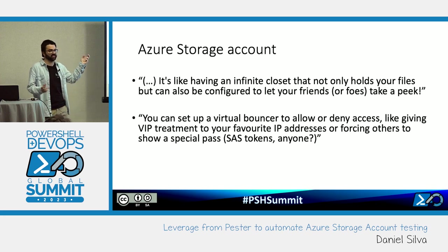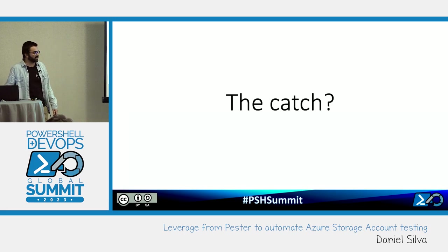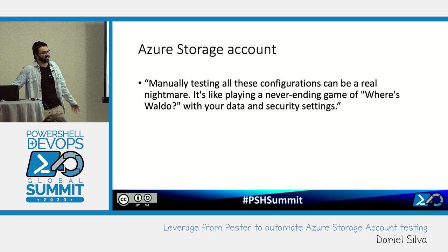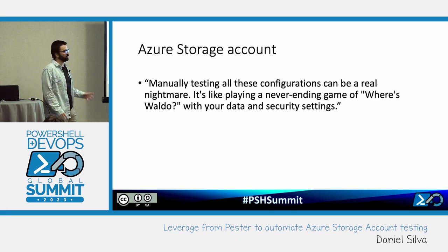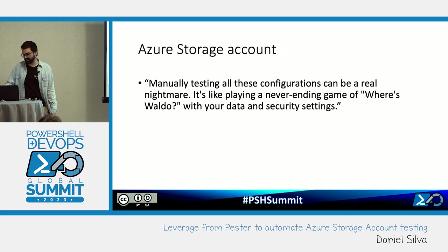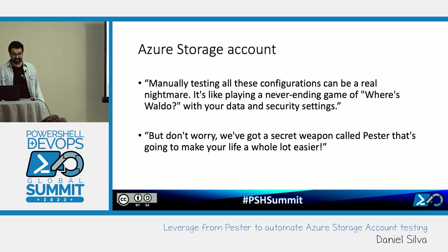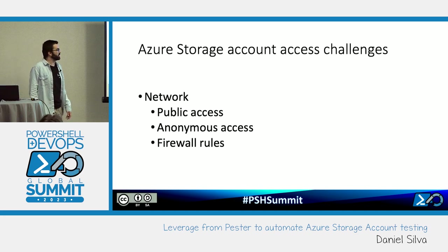What's the catch with all of this? Once you start digging into testing all of these settings — and I won't be doing manual tests — the amount of places you have to visit is like a bingo game of menus. ChatGPT finished by saying we have a secret weapon called Pester that makes our life a lot easier, and it does. So the biggest challenges I separate into two major categories: network and user access.